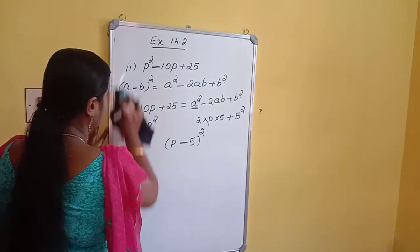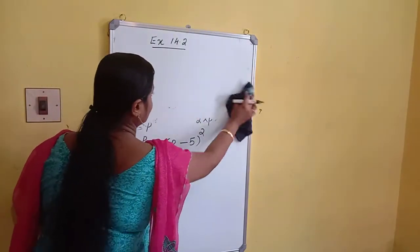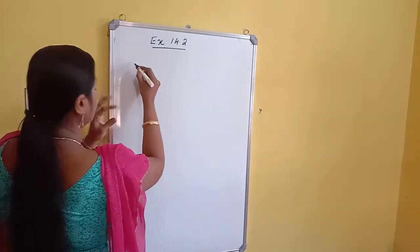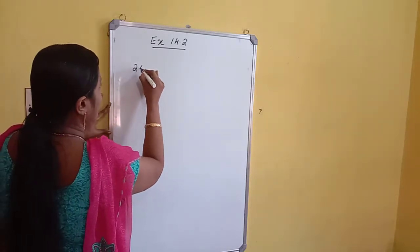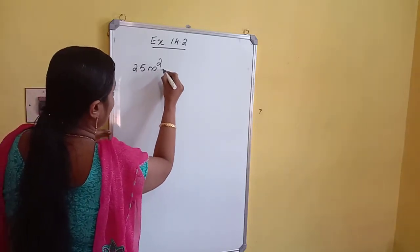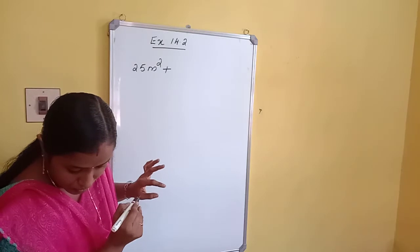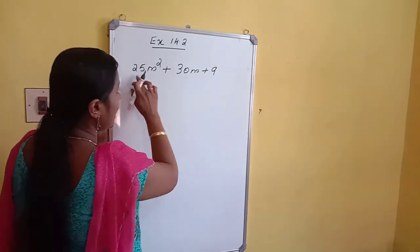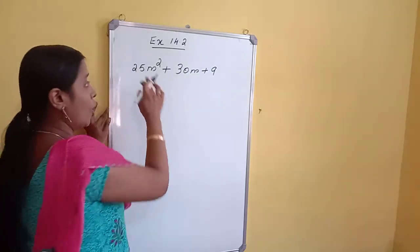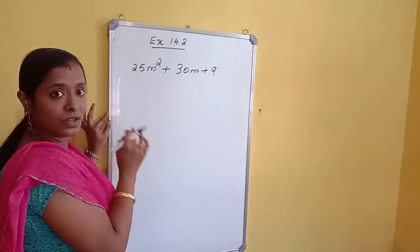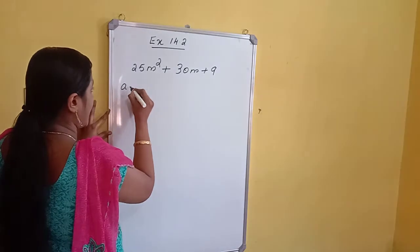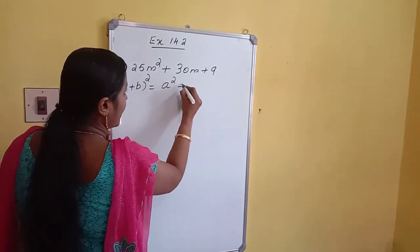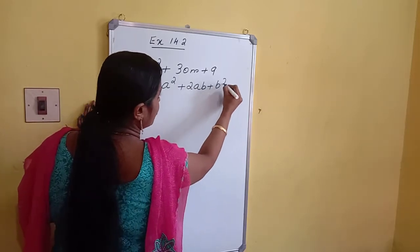Third problem: 25M squared plus 30M plus 9. There are three terms and all are positive, so we use the identity: A plus B whole square equals A squared plus 2AB plus B squared.